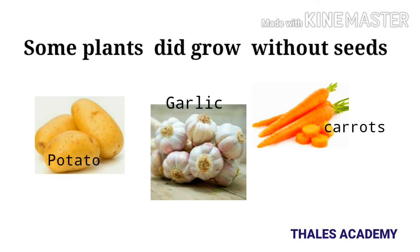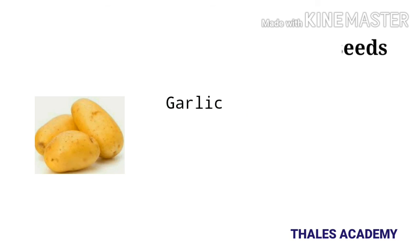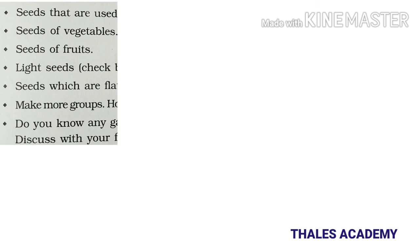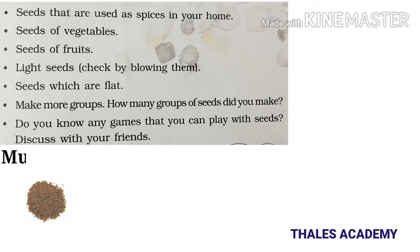There are some plants which trap and eat frogs, insects, and even mice. The pitcher plant, or Nepenthes, is one such plant. It is found in Australia, Indonesia, and Meghalaya in India. It has a pitcher-like shape and the mouth is covered by a leaf. It has a special smell that attracts insects, and when the insect lands on the mouth of the plant, it gets trapped and cannot get out.